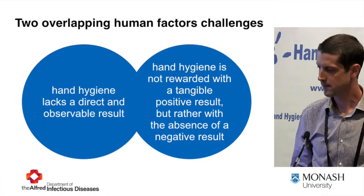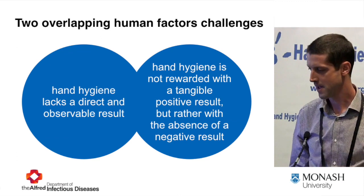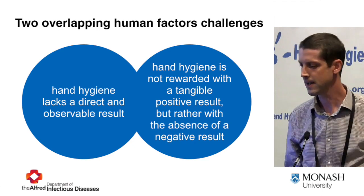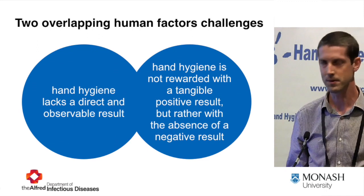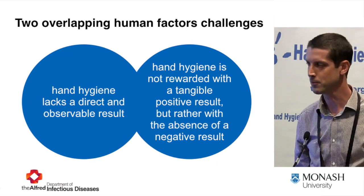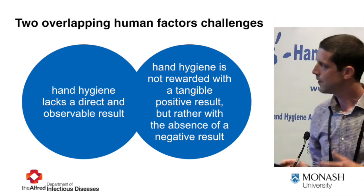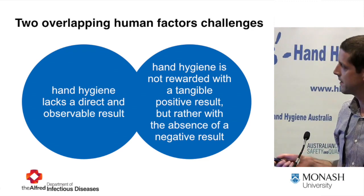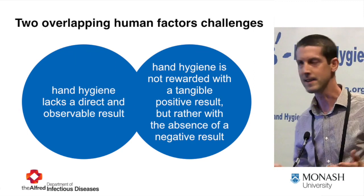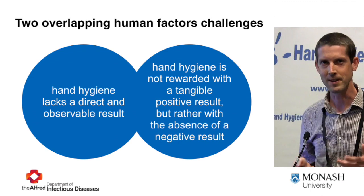This is really from Hugo Sachs — his human factors approach to thinking about why we have auditing. There are two problems with hand hygiene: hand hygiene lacks a direct observable result, and hand hygiene is not rewarded with a tangible positive result, but rather with the absence of a negative result. If your hands are not cleaned, you might end up with a healthcare-associated infection, but there will be a delay and you'll never know your unclean hands led to that.